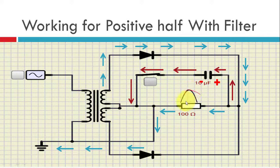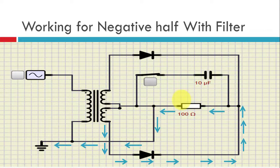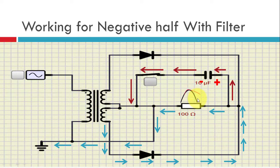It holds the output so the output does not fall in the second cycle. As we can see, this red line does not fall to zero. It does not fall to zero in the positive half as well as the negative half, because even in the negative half we get the same thing — the capacitor again starts charging. The black line is without the filter, and this red line is with the filter.